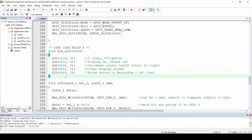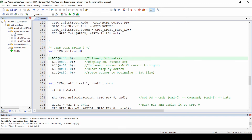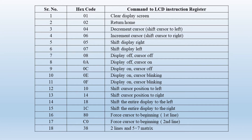Now let's look at the LCD initialization function. In the LCD initialization function we have written the hex codes along with the second parameter as 0, meaning these hex codes are instructions to the LCD. The first command is 0x38, which sets the LCD in two-line, 5x7 matrix mode. The next instruction is 0x0C, which turns on the display and keeps the cursor off or not blinking.